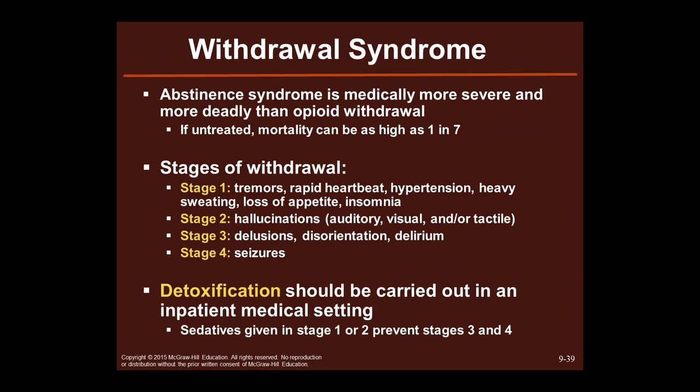Withdrawal: the abstinence syndrome is medically more severe and more deadly than opioid withdrawal. If untreated, mortality can be as high as one in seven. Withdrawal stages: stage one includes tremors, rapid heartbeat, hypertension, heavy sweating, loss of appetite, and insomnia — you need to get to the hospital during stage one. Stage two is hallucinations. Stage three is delusions, disorientation, and delirium. Stage four is seizures. If someone is in stage two or three, call an ambulance. Detoxification should be carried out in an inpatient medical setting — sedatives can be given during stages one and two to prevent stages three and four.